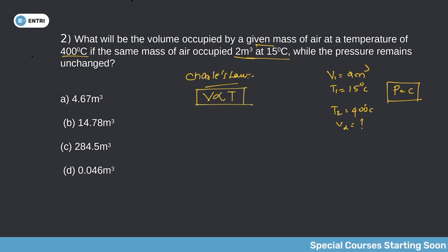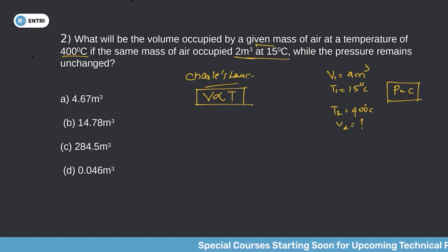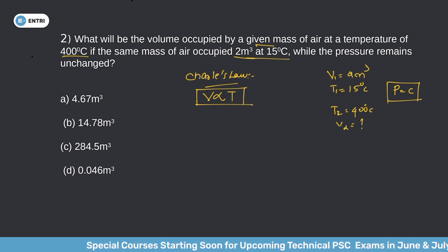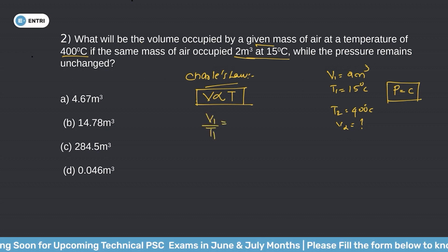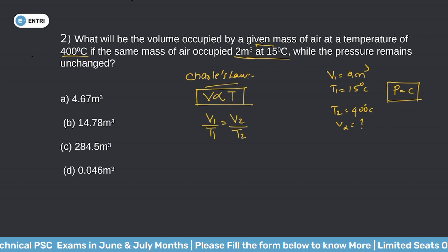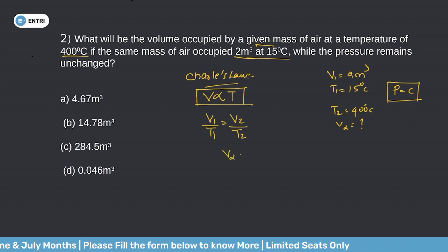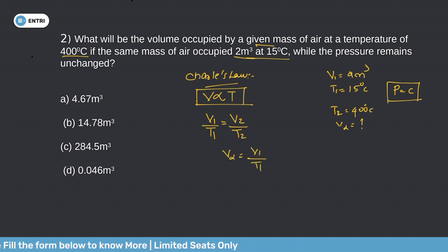At constant pressure, the volume of a given mass of gas is directly proportional to its absolute temperature. This is Charles's law. The equation we use is: V1 divided by T1 equals V2 divided by T2. Rearranging, V2 equals V1 multiplied by T2 divided by T1.